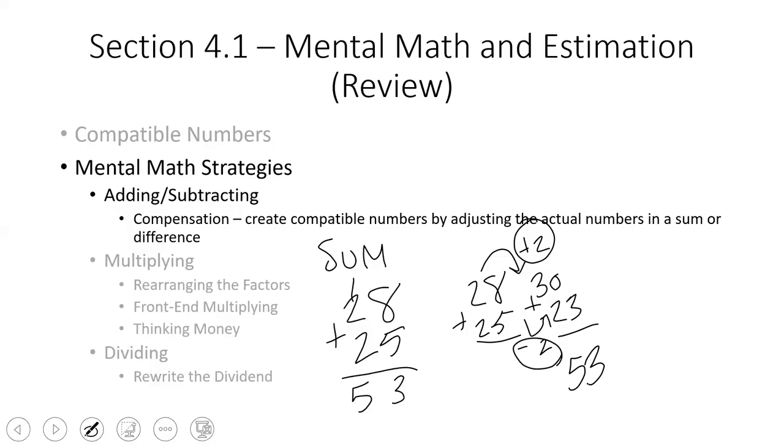Another way we can do it is we can make both of our addends be multiples of 10. I can make 28 into 30 by adding two, and I can make 25 into 30 by adding five. So I have 60 here as a sum, but we've added seven extra. So what I'm going to do from that 60 is subtract the seven that I added. Notice again, I have that same 53.